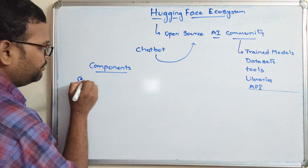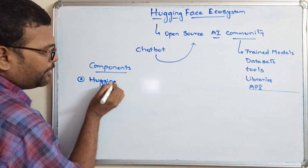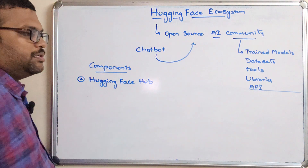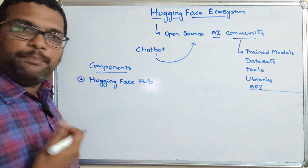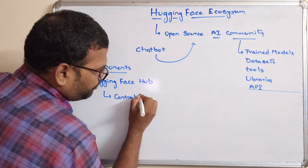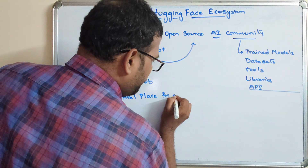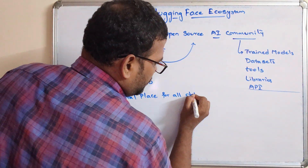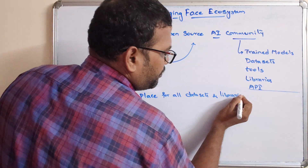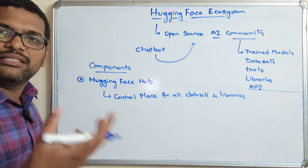The second component is Hugging Face Hub. Hub is a central place — it is a central place for all datasets and libraries, to support the work of researchers and analysts.